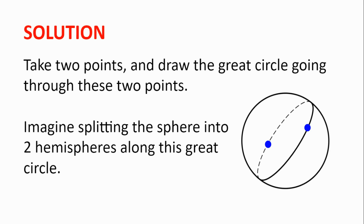Take two points and draw the great circle going through these two points. Now imagine splitting the sphere into two hemispheres along this great circle. So the two points will lie on both hemispheres.